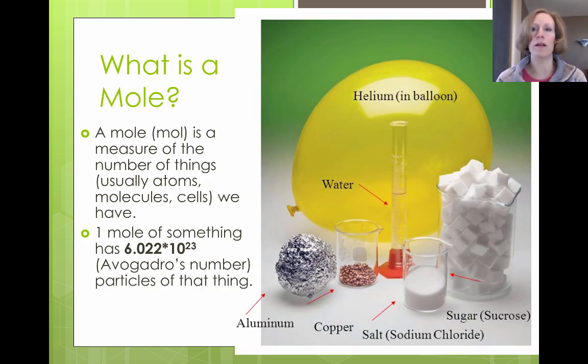So let's talk about what a mole is. We use a mole because we care about the number of particles, but we don't want to really count the particles because there are too many to count. A mole is a measure of the number of things. Usually it's atoms or molecules or cells that we have. Here's an example of a mole of different substances, but basically it's Avogadro's number, which is 6.022 x 10 to the 23rd particles of that thing. So for example, here we see this is a mole of helium in the balloon, here's a mole of water, a mole of sugar or sucrose molecules and a mole of salt molecules, a mole of copper and a mole of aluminum.